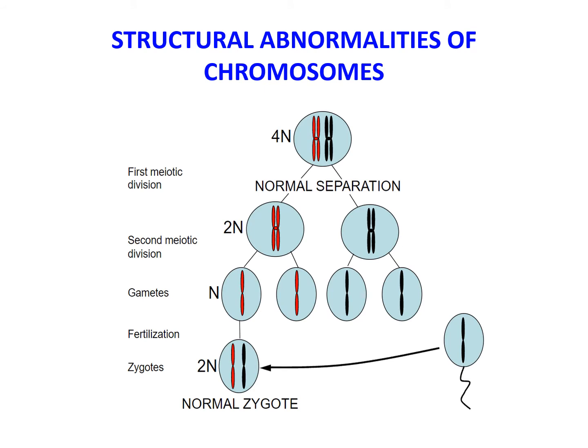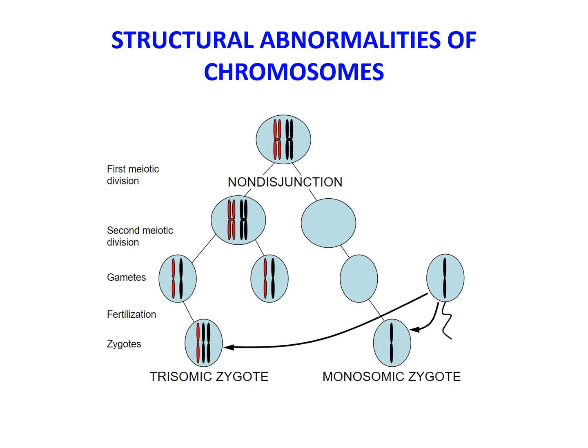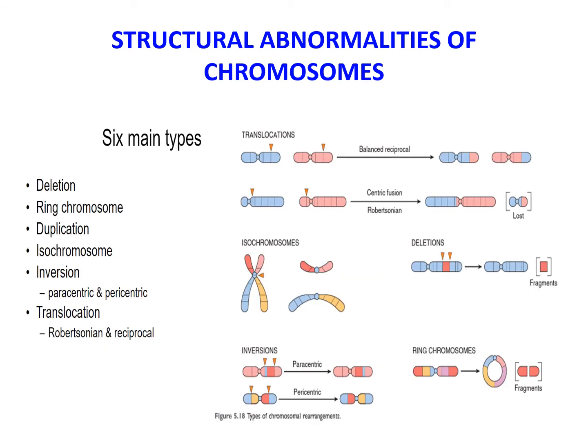This is the normal sequence in normal meiosis. When non-disjunction occurs during gametogenesis, the gametes formed have either an extra chromosome or one less chromosome. Fertilization of such gametes by normal gametes results in two types of zygotes: trisomy or monosomy. The six main types of structural abnormalities of the chromosomes are: deletions, ring chromosome, duplication, isochromosome, inversion (which can be paracentric or pericentric), and translocation (which could be Robertsonian or reciprocal).